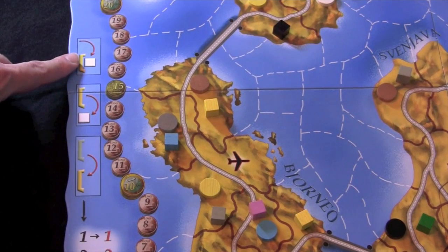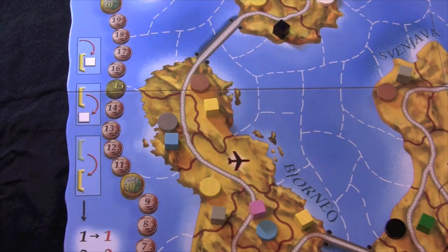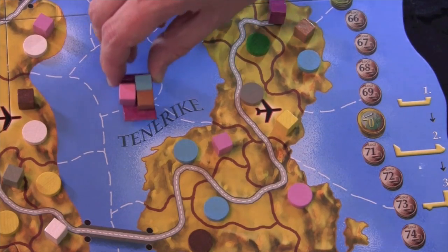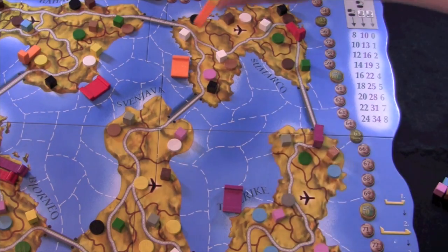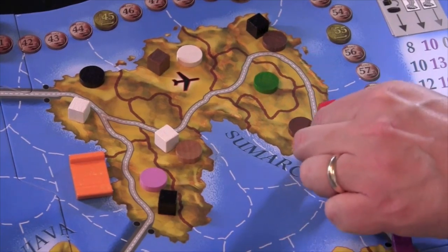Players spend actions to load cubes onto a vehicle, drop off or deliver cubes, and move from area to area. Boats move between adjacent sea zones. Airplanes spend one action to move from one airport to any other. And trucks spend one action to move on the road, and two to go off-road.